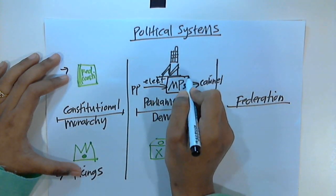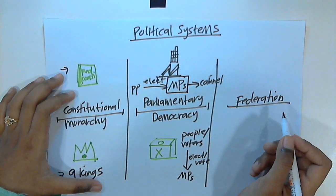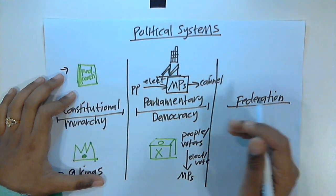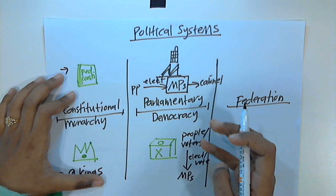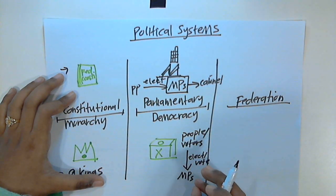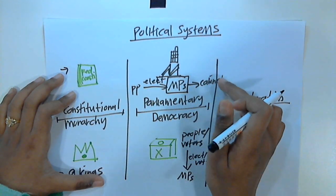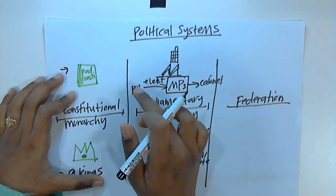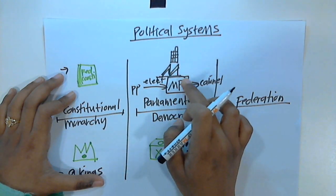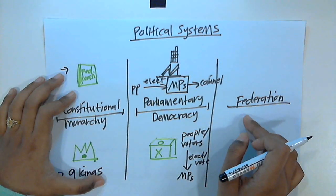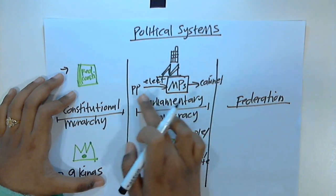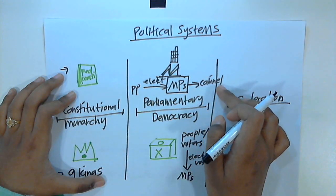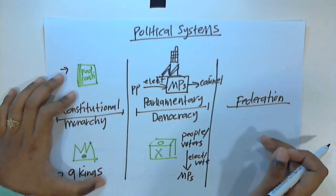This is the parliament part because MPs sit in the parliament. Parliamentary democracy, from this illustration, means a system where people and voters elect their members of parliament, who later some of them become cabinet members. The members of parliament are responsible and accountable towards the people, and also towards the cabinet. This concept is known as parliamentary democracy.